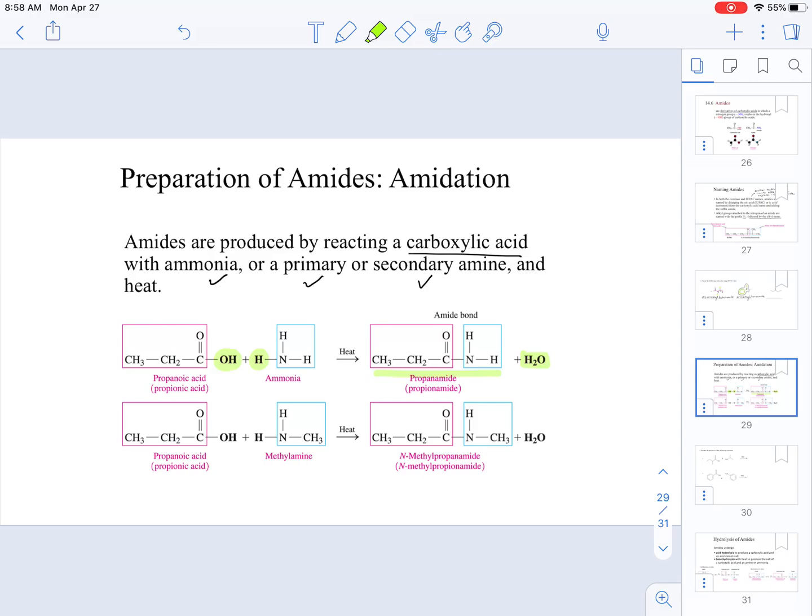Then, you will be linking the rest of the amine or the ammonia molecule to the C double bond O, and that's what results in the formation of the amide. As you can see, in the top example, we have a reaction with a carboxylic acid and ammonia. In the bottom example, we're going to have a molecule in which we have a carboxylic acid reacting with a primary amine.